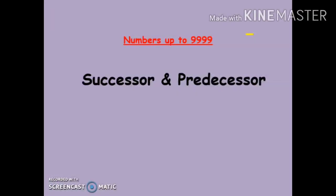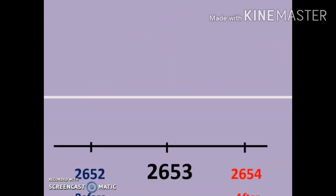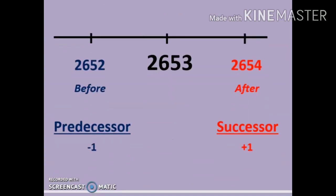Hi everyone, today we are going to learn successor and predecessor. In junior classes we have already done the concept of before and after, so predecessor and successor lie on the same track. Here you can see we are given a number 2653.